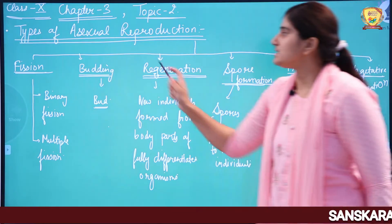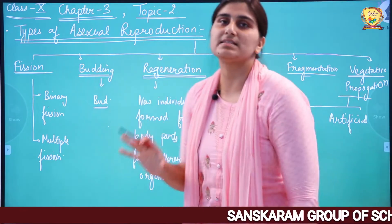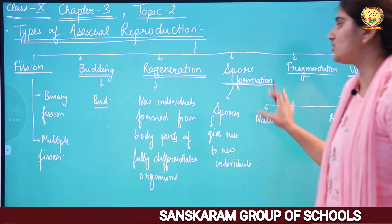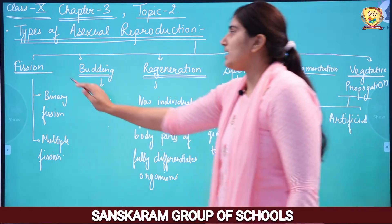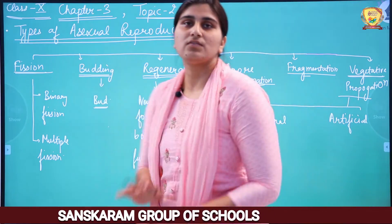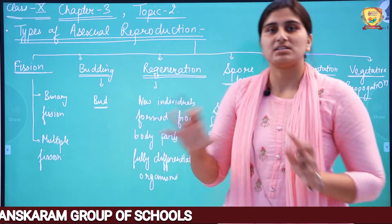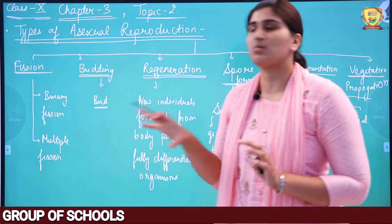Starting with the types of asexual reproduction — mainly 6 types of asexual reproduction are there, which we will study. The first one is Fission.